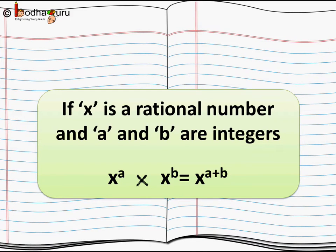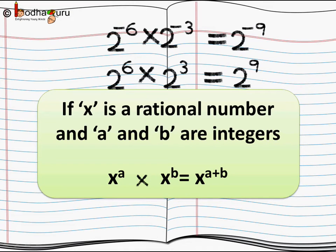So what do we see? If x is a rational number and a and b are integers, the law still holds true: x to the power a multiplied by x to the power b equals x to the power a plus b. Let us see more examples. Two to the power minus six multiplied by two to the power minus three — we just add the powers: minus six plus minus three equals minus nine. So the answer is two to the power minus nine. Similarly, two to the power six multiplied by two to the power three — six and three are integers, so adding gives two to the power nine.